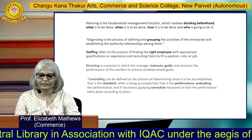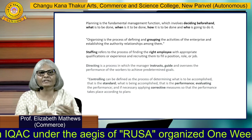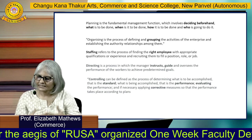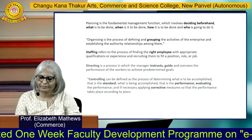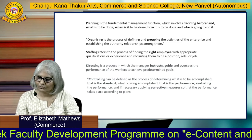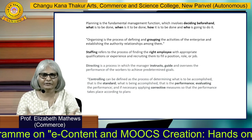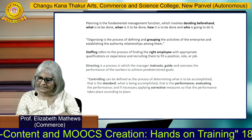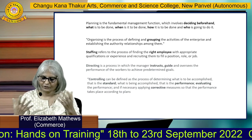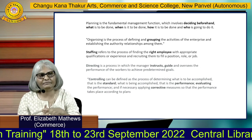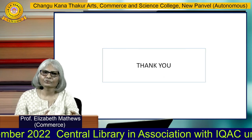Organizing is the process of defining and grouping the activities of the enterprise and establishing authority relationships among them. Staffing refers to finding the right employee and giving them the right place in the organization. Directing is the process of instructing, guiding, and overseeing the performance of workers with regard to predetermined goals — without direction there is no management. Controlling is the process of determining what is to be accomplished: you set standards, measure performance against them, find deviations, evaluate, and take corrective action wherever required.